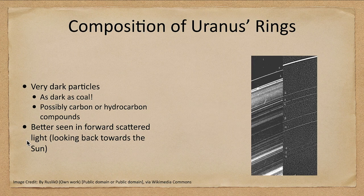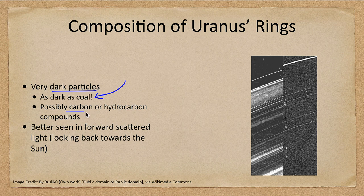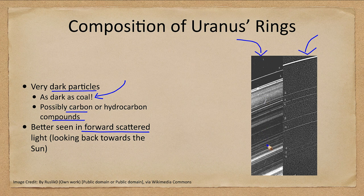What are Uranus's rings made of? They are extremely dark — very different from the rings of Saturn, as dark as coal — which is why we didn't detect them right away. We think they may have carbon or hydrocarbon compounds around the icy material. They are also better seen in forward scattered light. Looking from behind reveals a lot more detail than looking directly on toward the planet. To get this view, we need a spacecraft out beyond Uranus, so this is a view we cannot get from Earth.